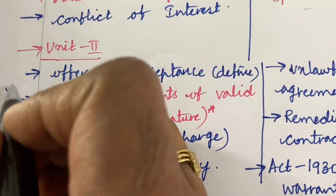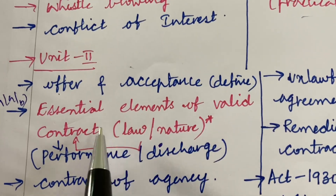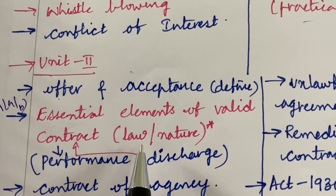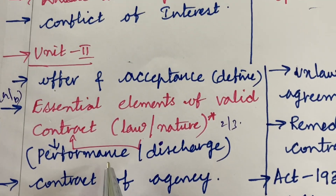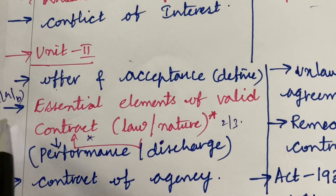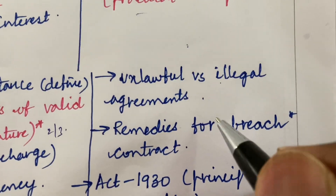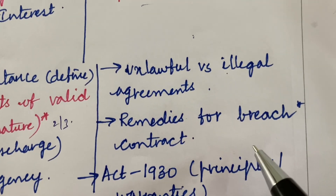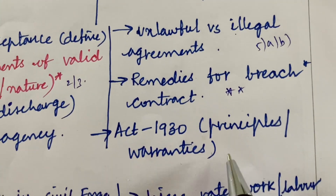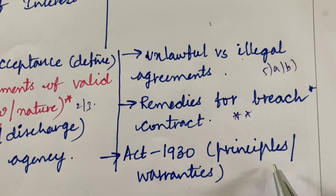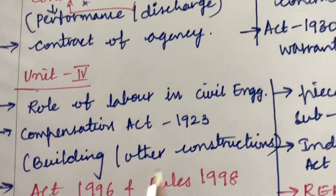For 4A and 4B, it is all about offer and acceptance. Define the terms and the essential elements of a valid contract, the law of contract, and the nature of contract — these may be 2-mark or 3-mark questions. Performance and discharge of contract may be a 4A question. The contract of agency, unlawful and illegal agreements, their differences, and remedies for breach of contract is one of the top most questions, being a 4A and 5B combination. The Act of 1930, its principles and guarantees, is said to be a 5-mark question.